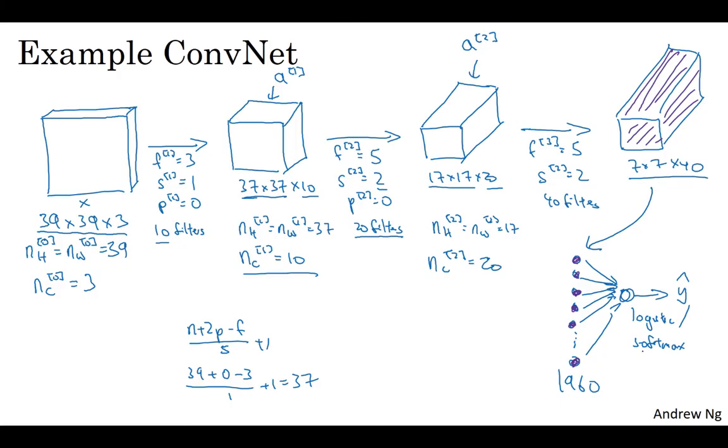This would be a typical example of a ConvNet. A lot of the work in designing a convolutional neural net is selecting hyperparameters like these: deciding what's the filter size, what's the stride, what's the padding, and how many filters you use. Both later this week, as well as next week, we'll give some suggestions and some guidelines for how to make these choices.